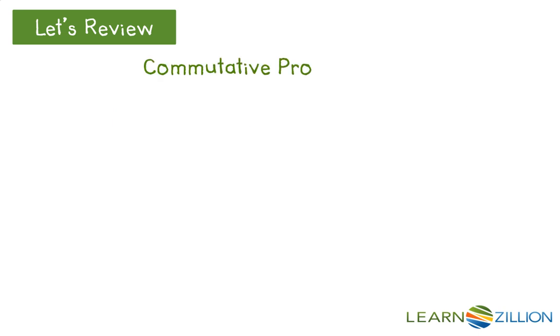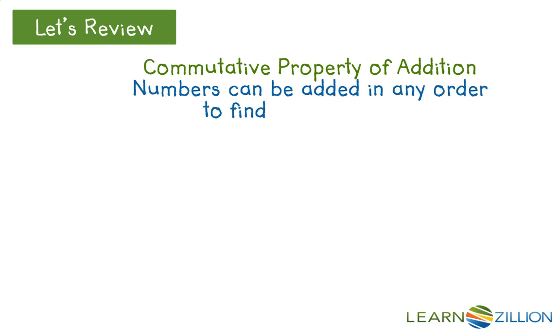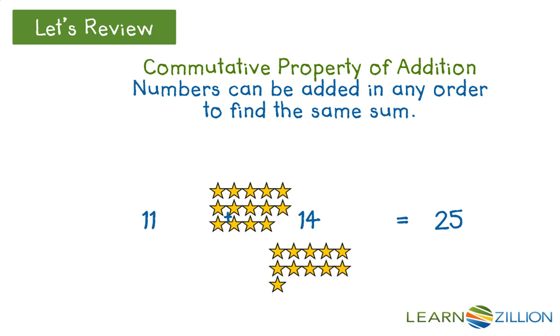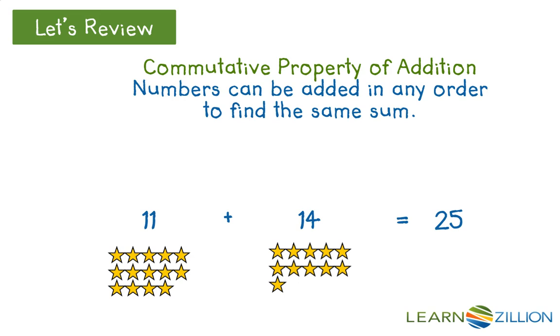Let's also review the commutative property of addition. It reminds us that numbers can be added in any order to find the same sum. Here is 11 stars plus 14 stars, which equals 25 stars. Because of the commutative property, we can switch the order of our addends to show 14 plus 11, which also equals 25.